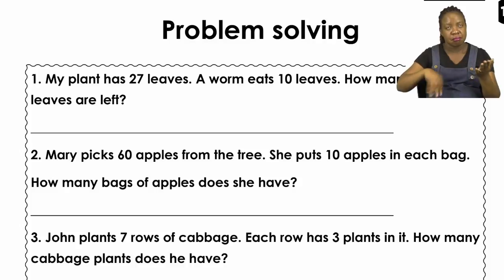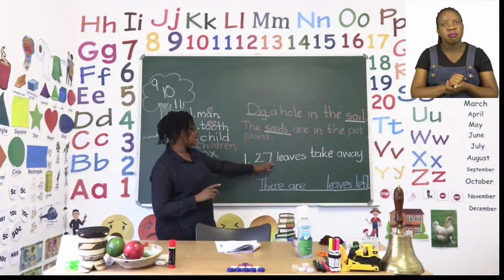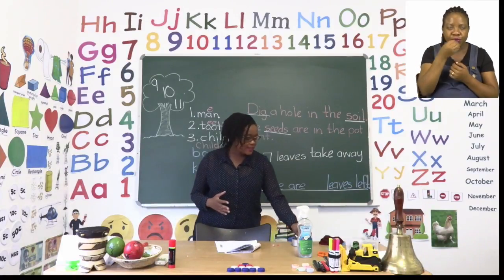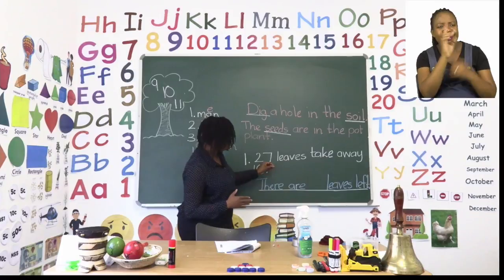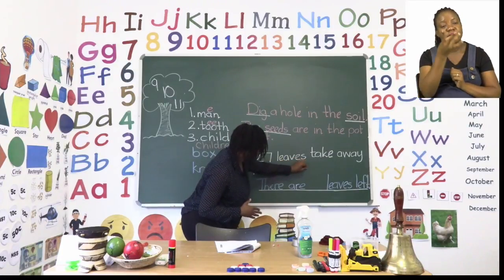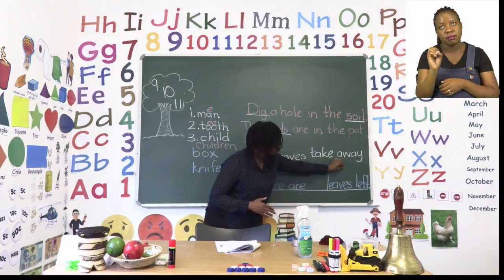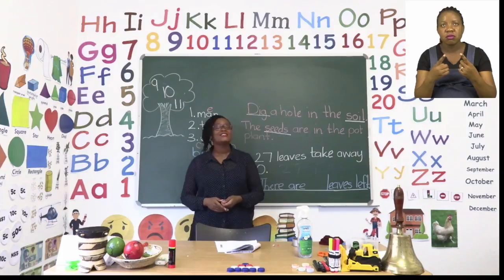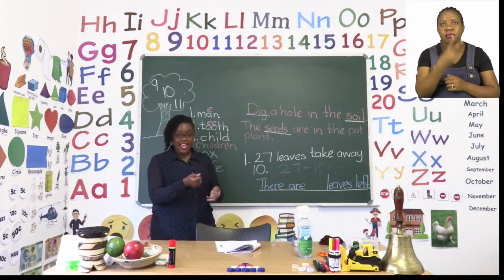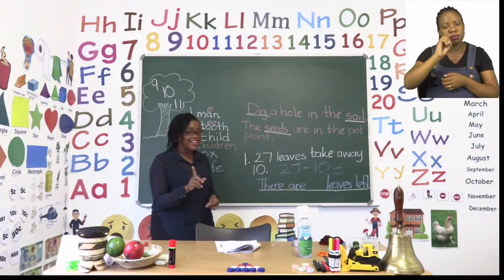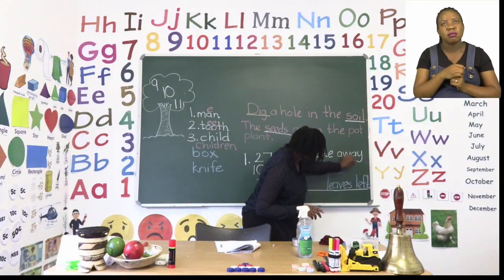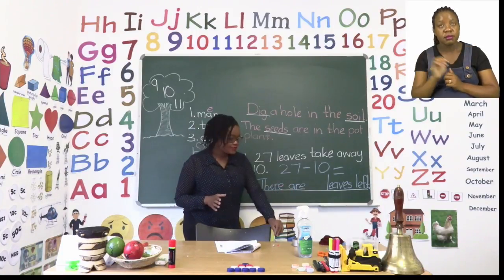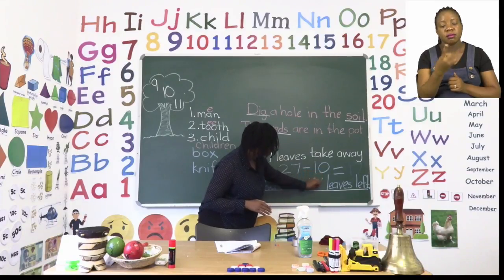Let's take a look at the board. We know we have 27 leaves and we're going to take away 10. Our sum is 27 minus 10 equals. You can use your fingers, counters, or your mental strength to help you. 27 take away 10 becomes 17. So if we write a sentence it would say: there are 17 leaves left.